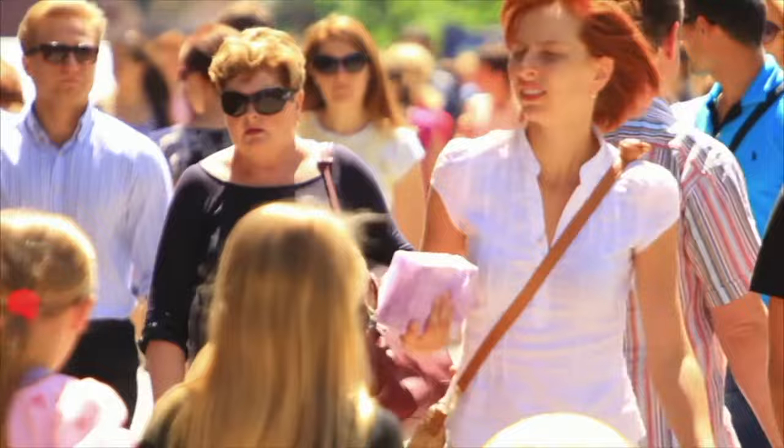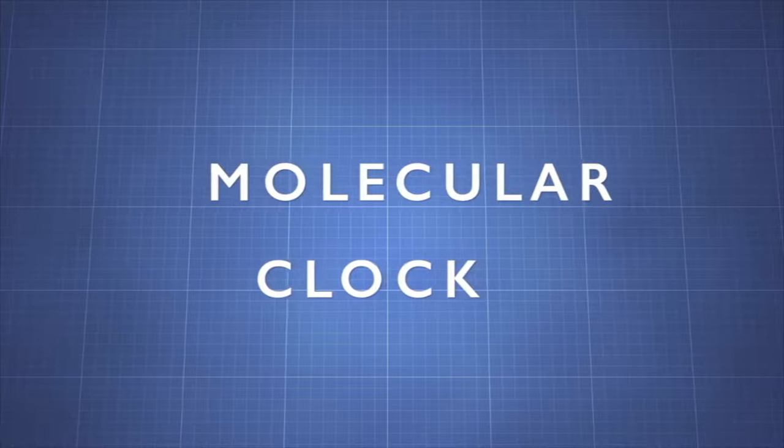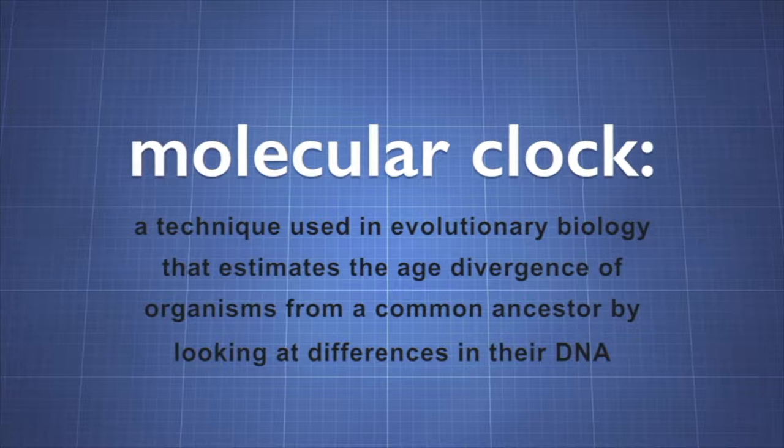Neutral mutations are evolutionary changes and occur in a clock-like fashion — they act as a sort of molecular clock. The molecular clock is a technique used in evolutionary biology that estimates the age of divergence of organisms from a common ancestor by looking at differences in their DNA.